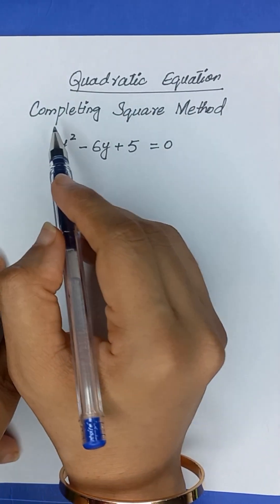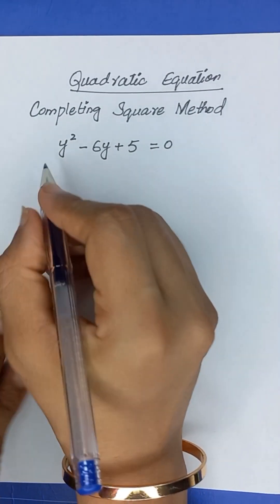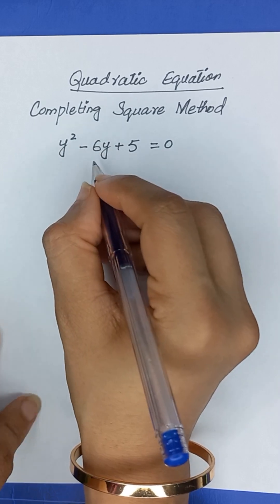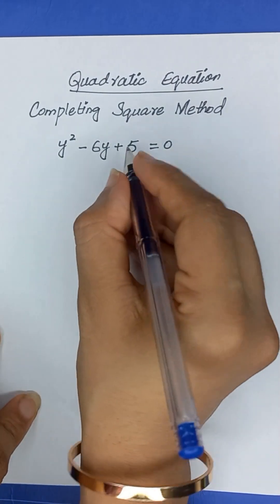Today, we will solve quadratic equation by completing square method. The quadratic equation is y squared minus 6y plus 5 is equal to 0.